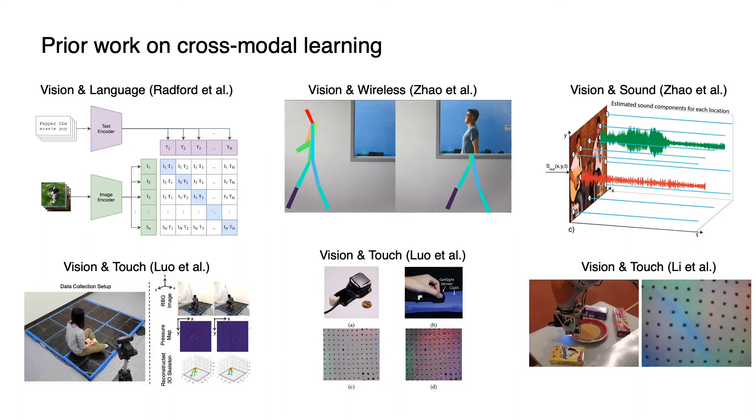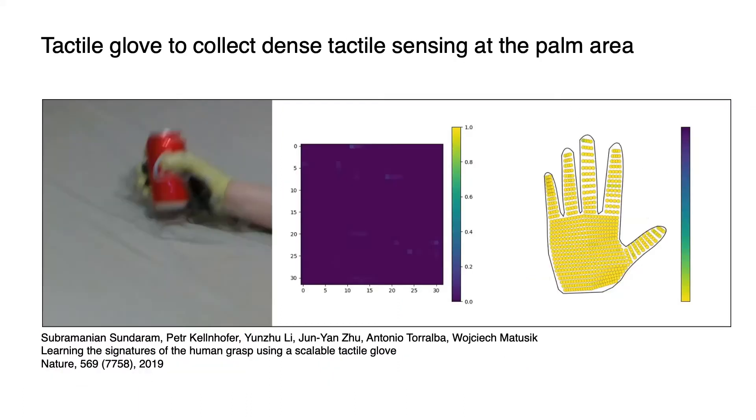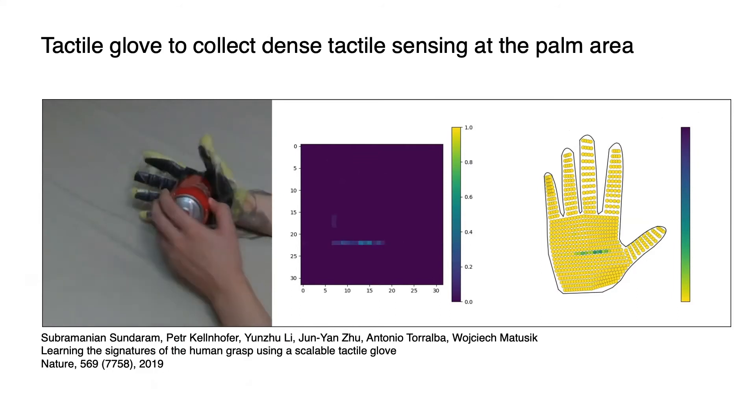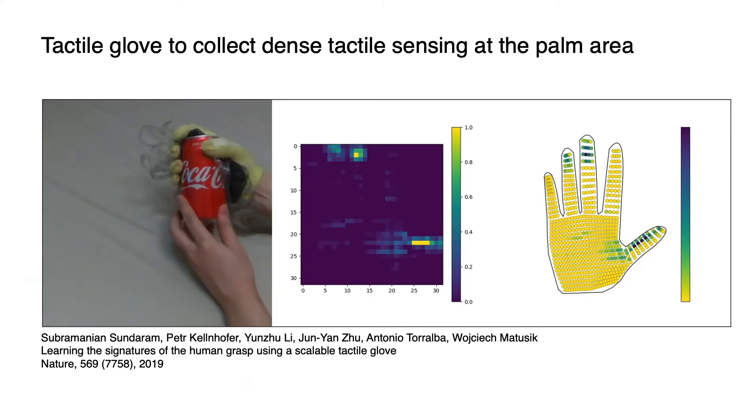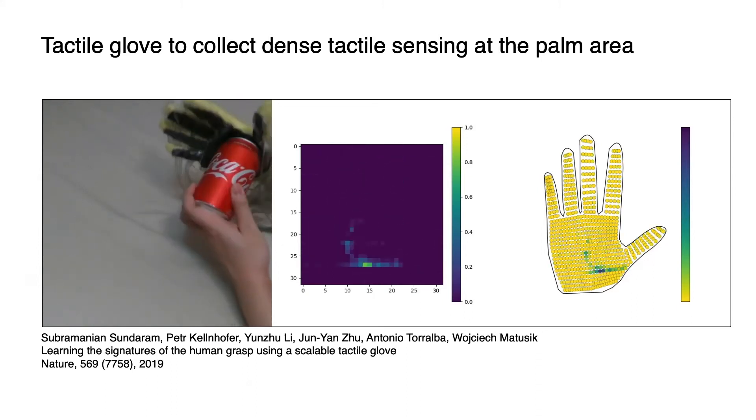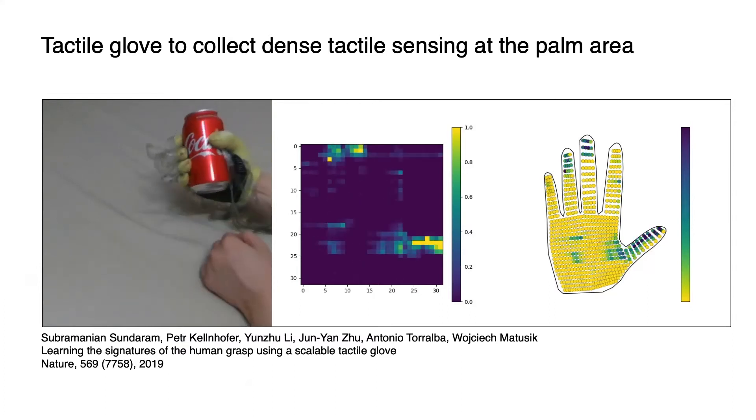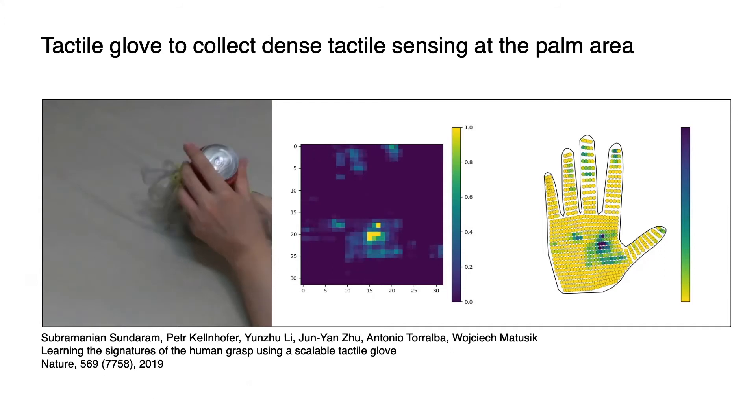Different from prior work, we are the first to use the cross-modal learning framework by leveraging a tactile glove with dense tactile sensing to study hand-object interactions in highly dynamic tasks. Specifically, we employ the tactile glove developed by Sundaram et al. The glove is both flexible and deformable, giving us dense tactile sensing covering the palm area. As shown in the video, the tactile image is a pressure map where each pixel is a monotonic function of the amount of pressure applied on that location. It allows us to record the tactile information while performing various interactive tasks with diverse objects.